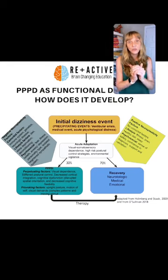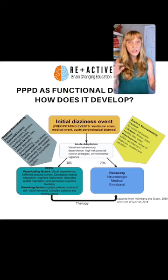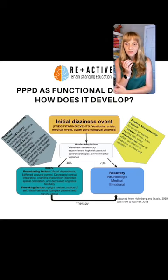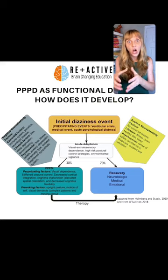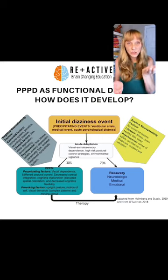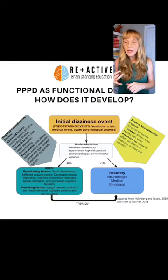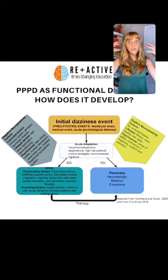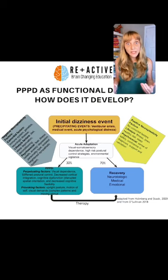Visual dependence — heavily weighting visual input — was part of the acute adaptation, but it stayed and got more reinforced to such an extreme that it's hard to break out of. That's where therapy comes in: to decrease visual dependence and increase use of the other sensory systems. We see decreased cortical integration, cognitive dysfunction, disrupted spatial orientation, and decreased cognitive flexibility. I often think of it as a scale — the brain heavily weights the visual system and underweights the sensory system. These imbalances are triggered particularly by upright posture, motion, or visual demands, like going to a big store like Bed Bath & Beyond.